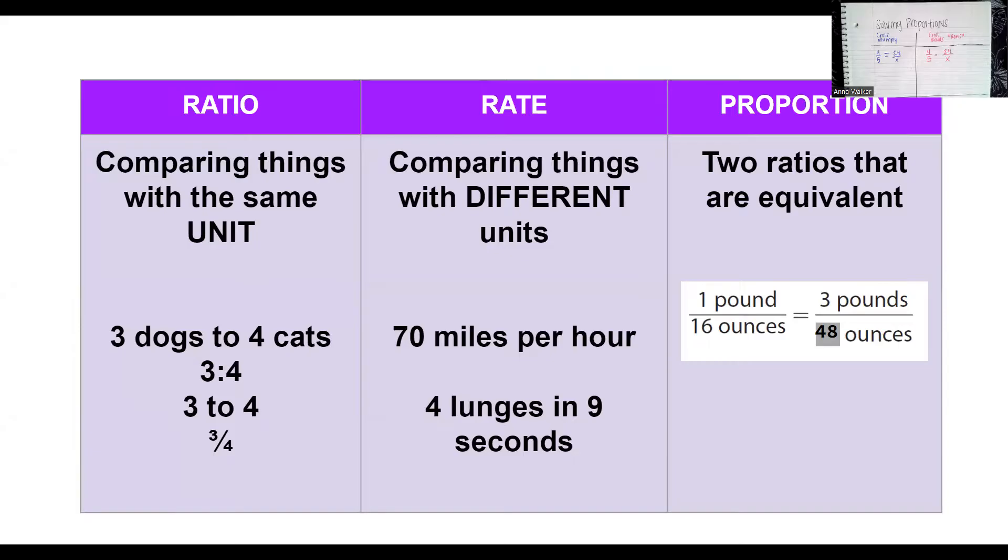A ratio is a comparison of two things that have the same unit. For example, if I compare dogs and cats in a shelter, there are three dogs for every four cats. That's known as a ratio. Even though dogs and cats are different species, they're both the same unit of an animal.